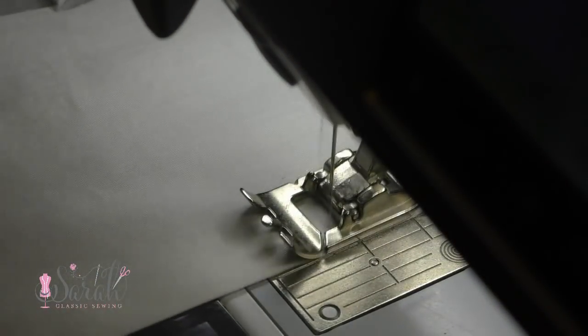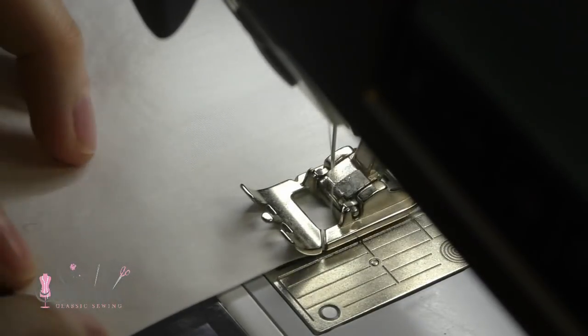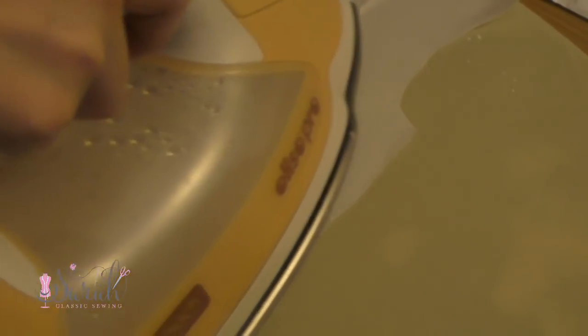If you'd rather not have that look, then what you can do is do the tucks on your front shirt and use that shirt front with all the tucks in it as a pattern piece for the front shirt lining.